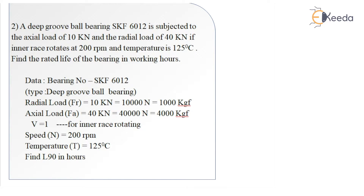Let's first write down the data. The bearing number given is SKF6012, which is a deep groove ball bearing. Radial load is given as 10 kN, that is 10,000 N. Axial load is given as 40 kN, that is 40,000 N. For the inner race rotating, we get the value of V as 1. The speed is given as 200 rpm. Temperature is 125 degrees centigrade. We need to find out life in hours, that is L90.